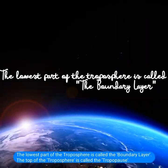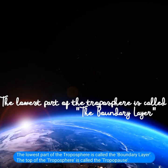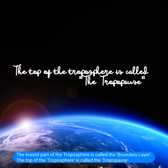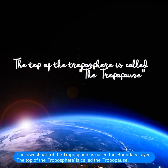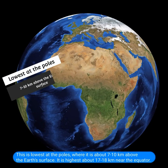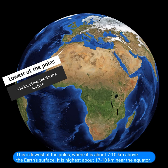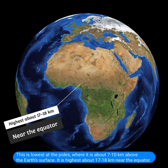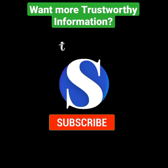The lowest part of the troposphere is called the boundary layer. The top of the troposphere is called the tropopause. This is lowest at the poles, where it is about 7 to 10 kilometers above the earth's surface. It is highest about 17 to 18 kilometers near the equator.